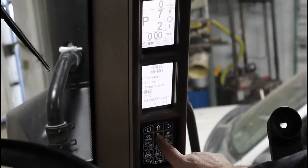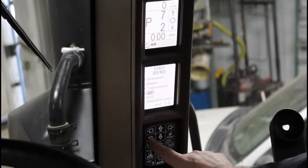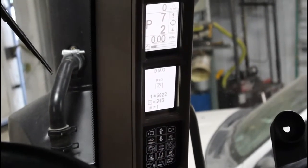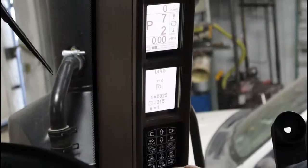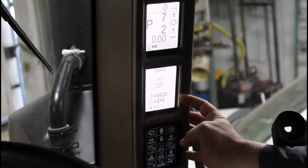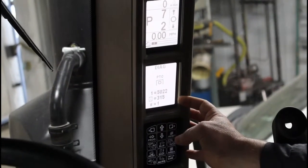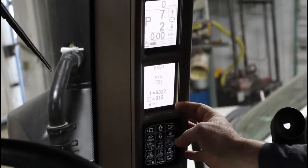Once you get to the different diagnostic menu, hit the program button which will enter that particular function. As we can see here, we have a fault code, one fault code of 5022. It's happened at 315 hours and it's happened one time.